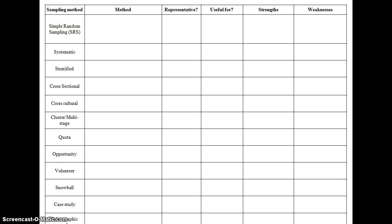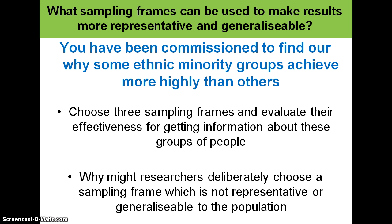The sampling methods usually referred to are things like simple random sampling, quota sampling, stratified sampling, and then opportunity and volunteer sampling too. You also looked at a task about being commissioned to find out why some ethnic minority groups achieve more highly than others. You were asked to consider a sampling frame that would be suitable to get that sample of population and then evaluate it.